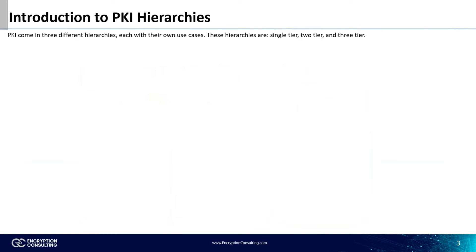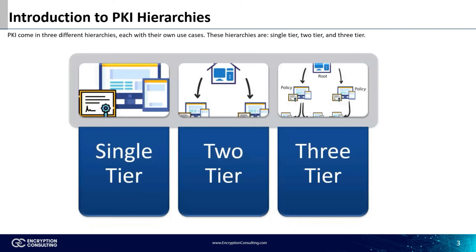When talking about public key infrastructure hierarchies, there are three models we think of: the single-tier, the two-tier, and the three-tier. These hierarchy models are all used for different purposes depending on an organization's needs.